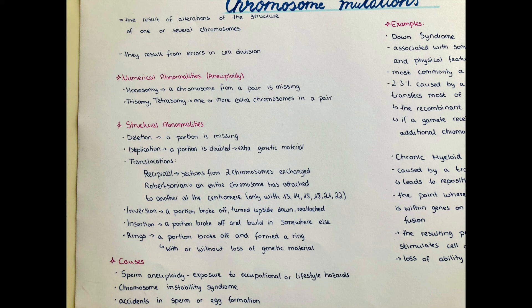That can happen, for example, in crossing over in meiosis. Chromosome mutations can be divided either into structural or numerical abnormalities.